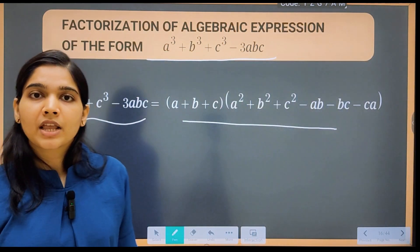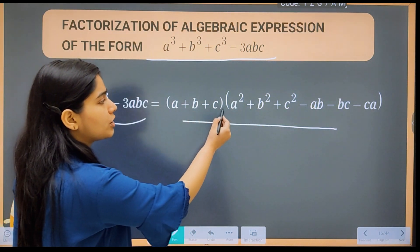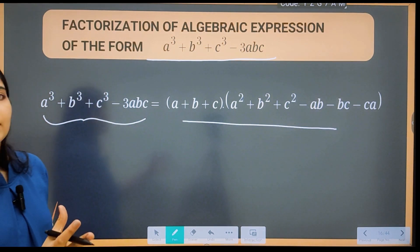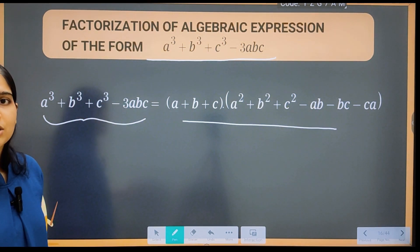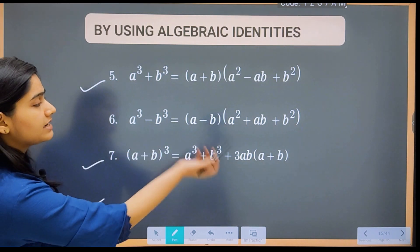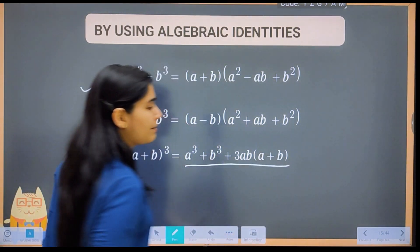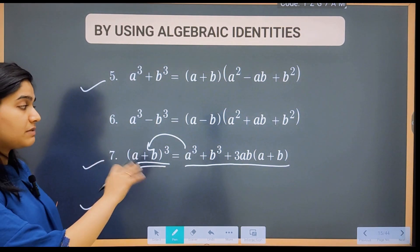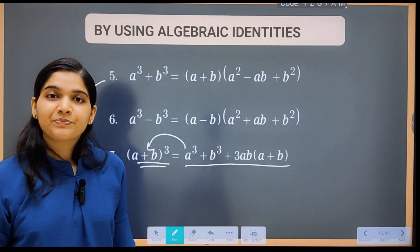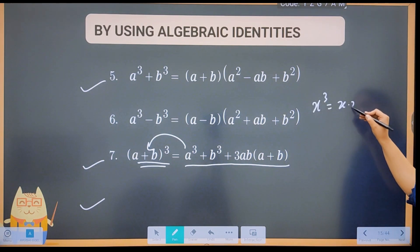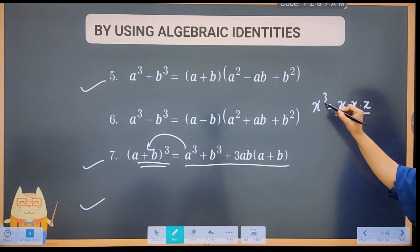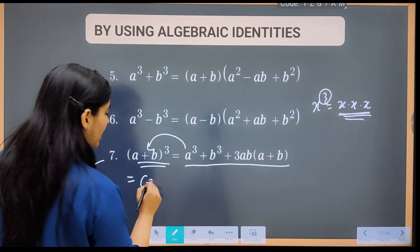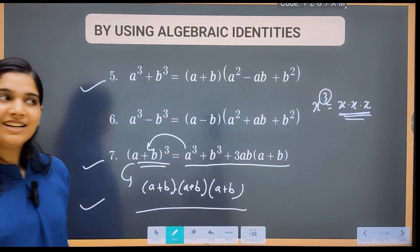Factorization means expressing as a product of two algebraic expressions. So we identify which identity the given expression matches, and write it in the corresponding factored form. For example, (a+b)³ can also be written as (a+b)(a+b)(a+b), since a cube means multiplying three times, as we learned in exponents and powers.